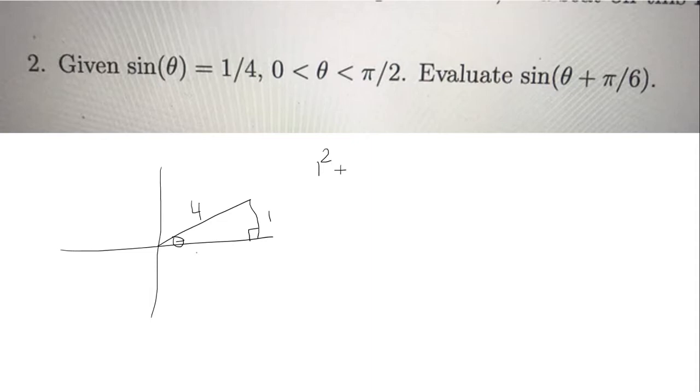We have 1 squared plus, we'll call this side x. So it's 1 squared plus x squared equals 4 squared. That's 1 plus x squared is 16. So x squared is 15. In other words x has to be the square root of 15.